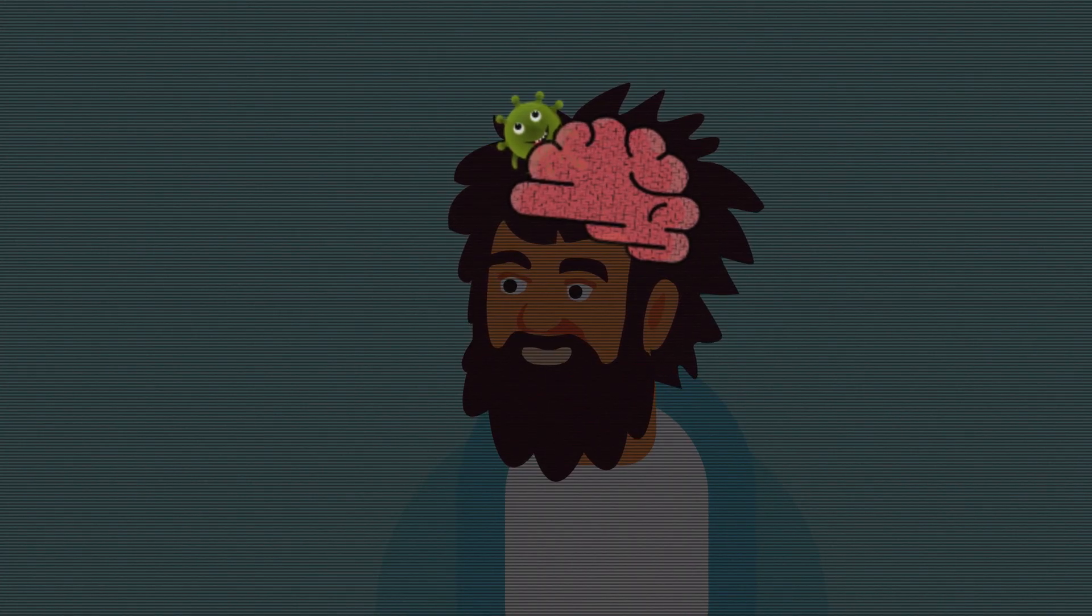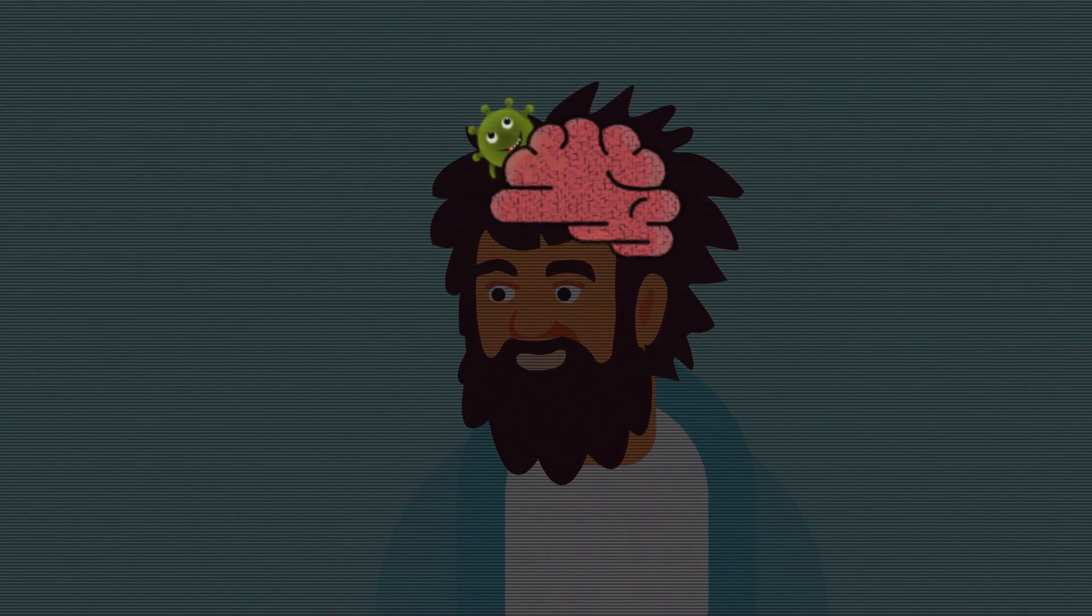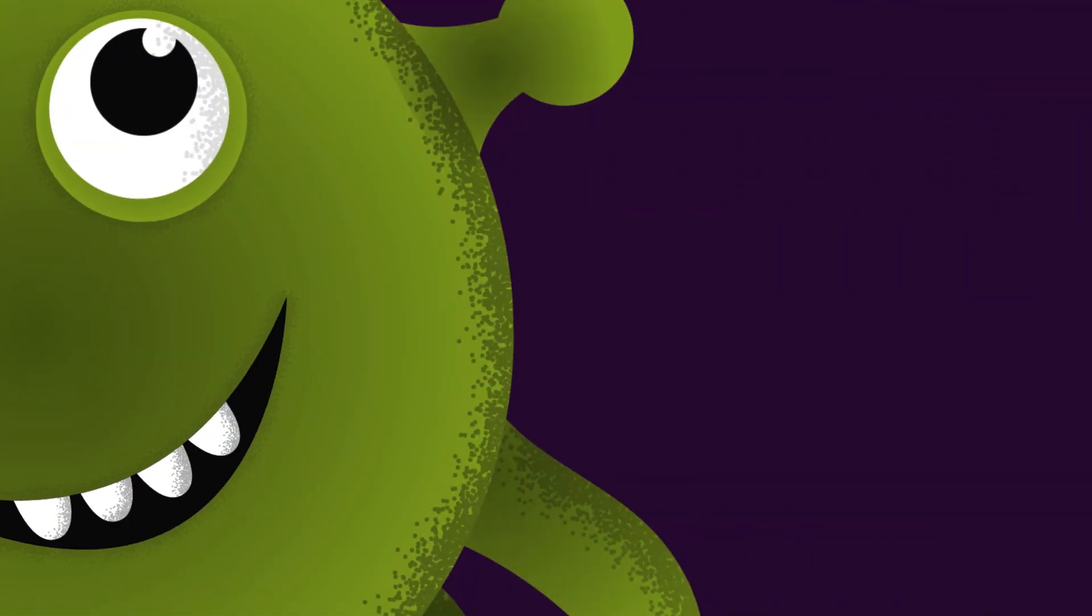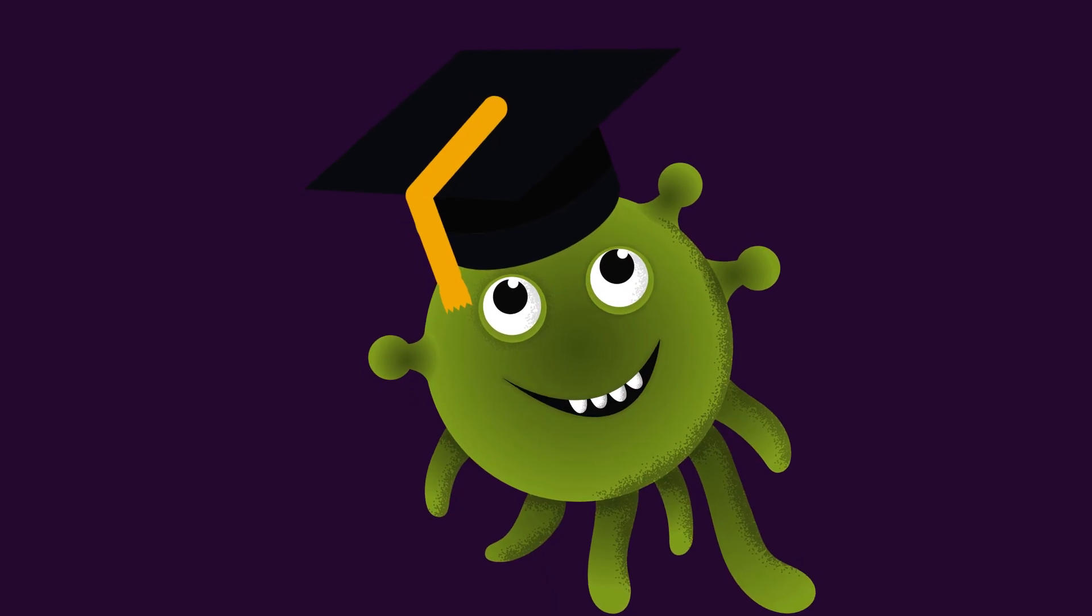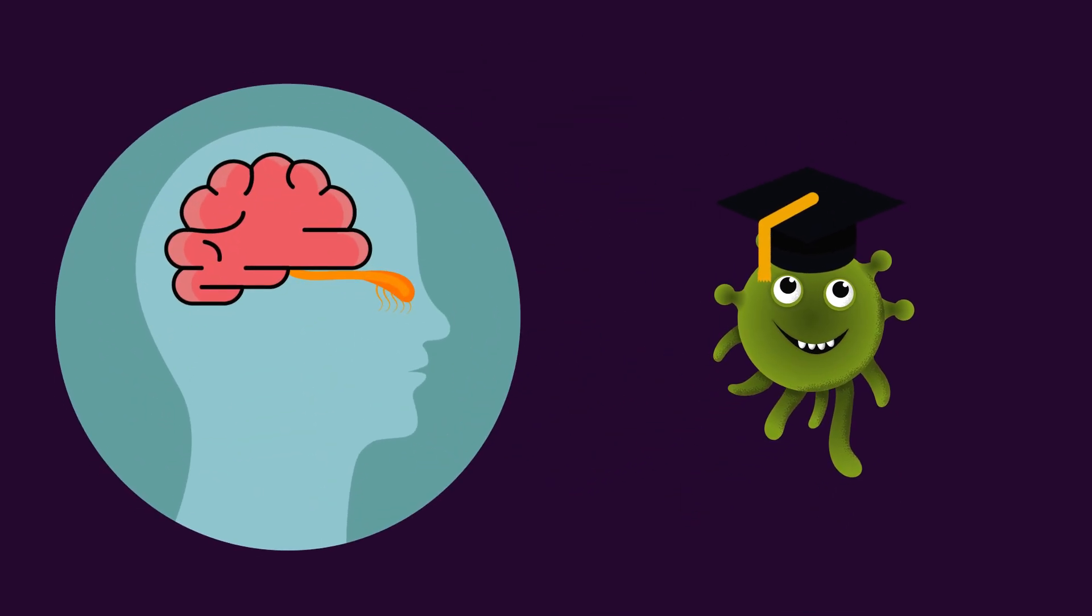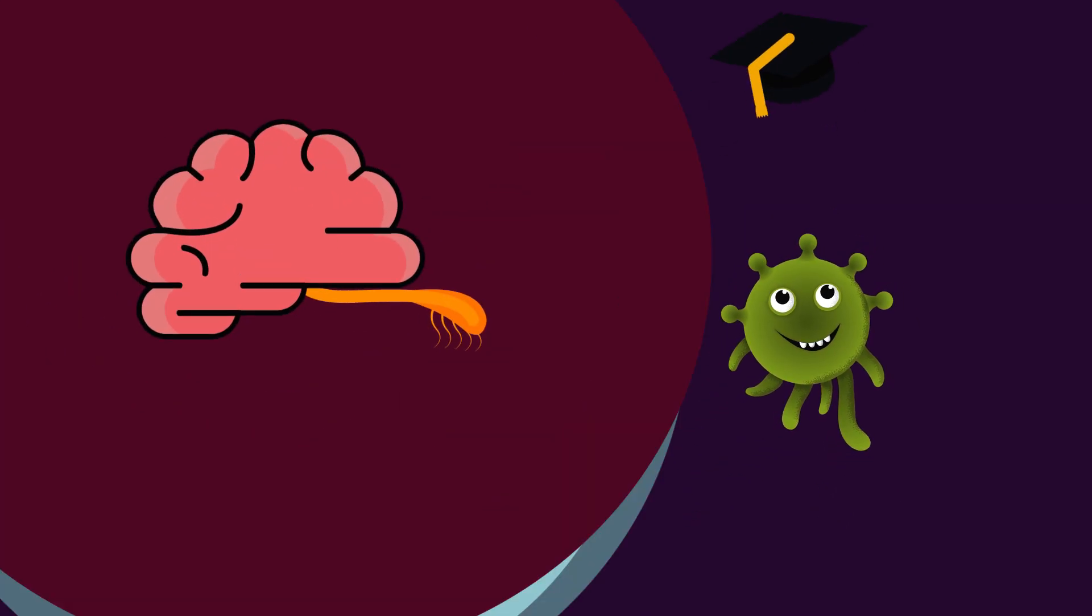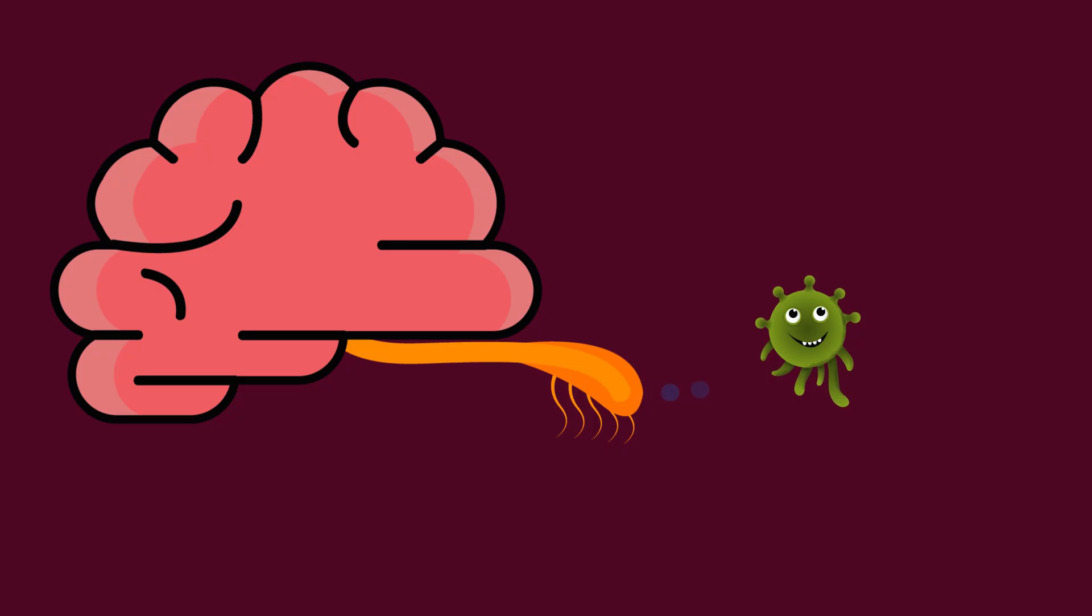Now, you might be thinking, how the hell does this amoeba find its way to the brain? Well, it's just smart, you know. It has a good understanding of the human anatomy. Jokes aside, it is attracted by the chemicals secreted by the nerve cells of the olfactory nerve. It travels through the olfactory nerve and enters the frontal lobe of the brain.